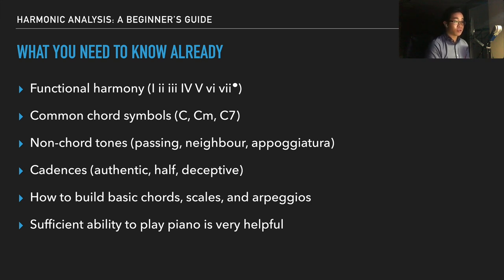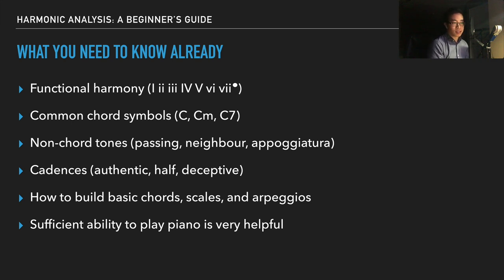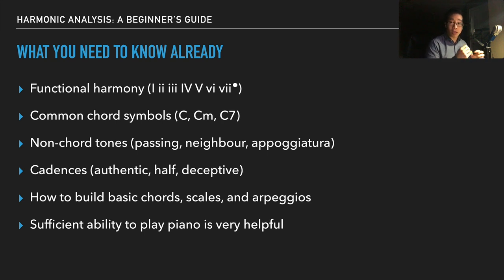Another useful skill is building basic chords, scales, and arpeggios. Chords are built in thirds — C, E, G — not C, D, E, which would be a cluster. You should know major and minor scales, since harmonic analysis starts all the way back in classical and baroque music. Arpeggiation is when you take a chord and break it apart playing it up and down. A sufficient ability to play piano is also very helpful, because you can try things out and get a sense of what the composer is doing.